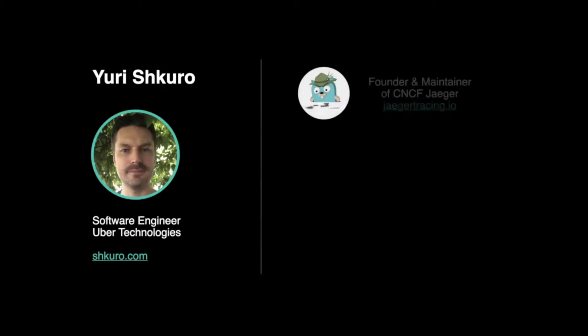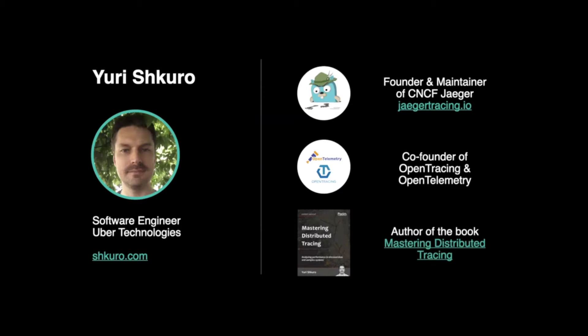A few words about myself: I'm a software engineer at Uber. I started Jäger as an internal project and then we donated it to Cloud Native Foundation. I'm also a co-founder of OpenTracing and OpenTelemetry projects, which are the instrumentation projects for tracing. I also published a book last year about tracing and my experiences at Uber, as well as experiences with Jäger and how to deploy, configure, and things like that.